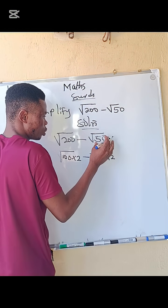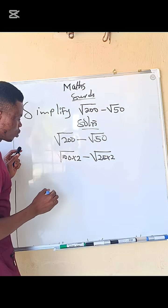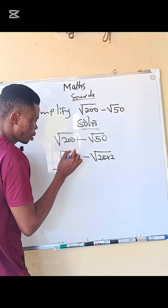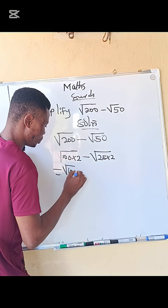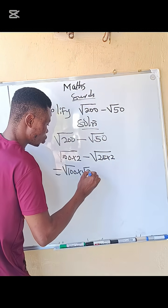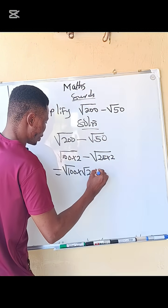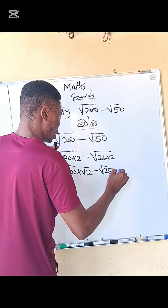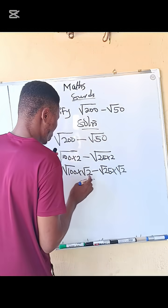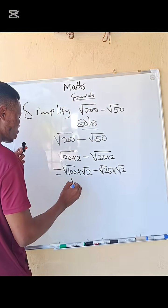Let's go. We can spread this square root. We have √100 multiplied by √2 minus √25 multiplied by √2. What is the square root of 100? That is 10. 10√2 minus...